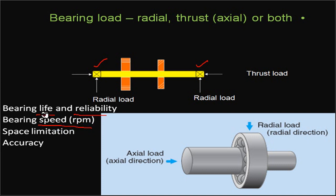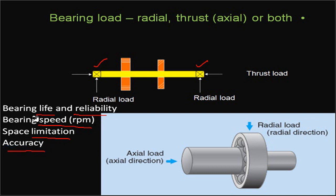Bearing life is generally expressed in revolutions, so speed is an important factor. Space limitation is also a consideration — the space available for bearing mounting — as is accuracy. These are the important factors to consider in bearing design.